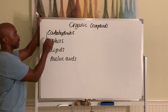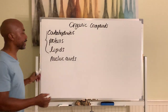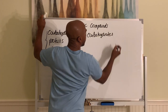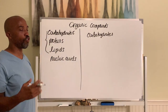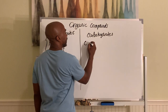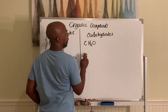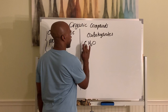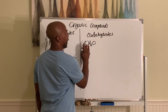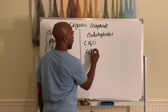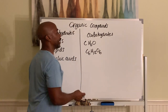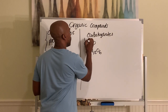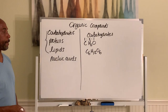We'll cover carbohydrates, proteins, and lipids now, and nucleic acids later in the semester. Carbohydrates, as the name suggests, are basically carbons that are hydrated. The general formula for a carbohydrate is CH₂O — for every carbon you have, you'll have a water molecule around it. So for example, if you had six carbons, it becomes C₆H₁₂O₆. It's always a one-to-two-to-one ratio of C:H:O.